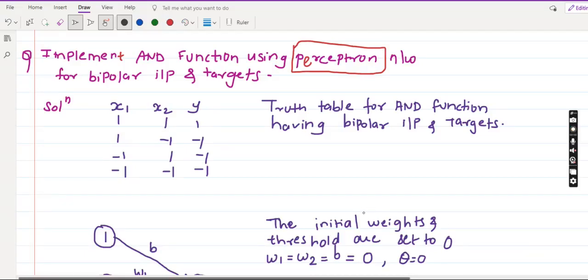Video on numerical and artificial neural networks. The next question is to implement AND function using the perceptron network for bipolar inputs and targets.